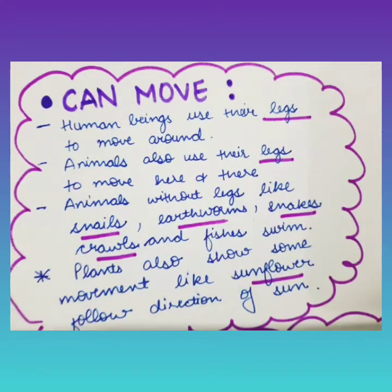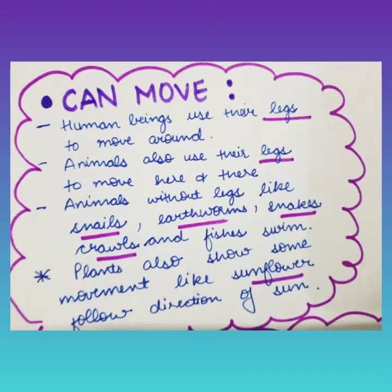The first feature is: living things can move. Human beings use their legs to move around — to run, walk, etc. Animals also use their legs to move here and there. Animals without legs, like snails, earthworms, and snakes, crawl, and fishes swim in water.